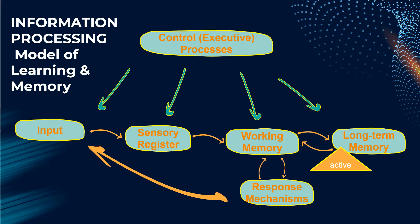While information is in working memory, it is then related to knowledge in long-term memory. This is the permanent memory where, once it is activated and placed into working memory, it can be integrated with new information. That is why long-term memory is considered active.